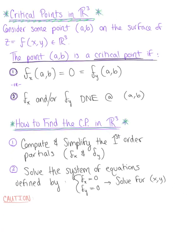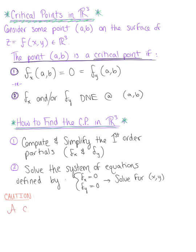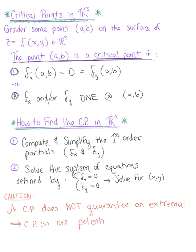Exercise a little caution: a critical point does not guarantee an extremum. This process — solving the system of equations created by the partial derivatives set equal to zero — simply provides potential extrema, just like we see in R2. We have to apply a second derivative test to verify if these points are actually extrema.